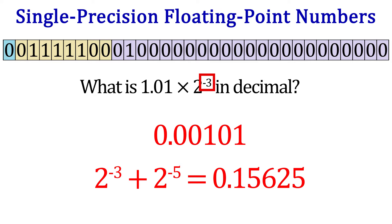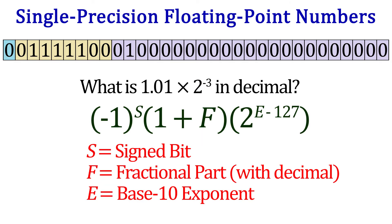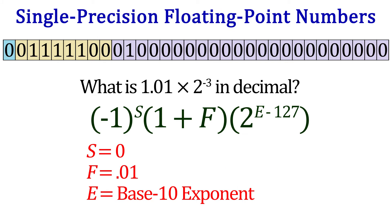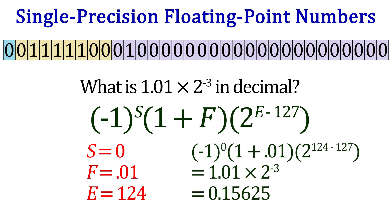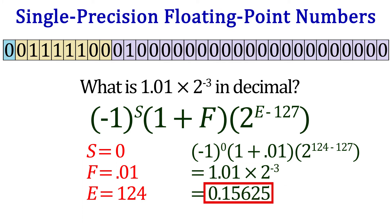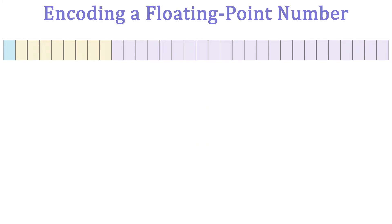It takes repetition, but if it makes it easier, try using this formula. The sign bit is 0, the fractional portion is 01, and the exponent in base 10 is 124. Simplifying gives us 1.01 times 2 to the negative 3rd, which is what we got before — and will give us 0.15625 in decimal. Now let's try coding a decimal number in floating point.